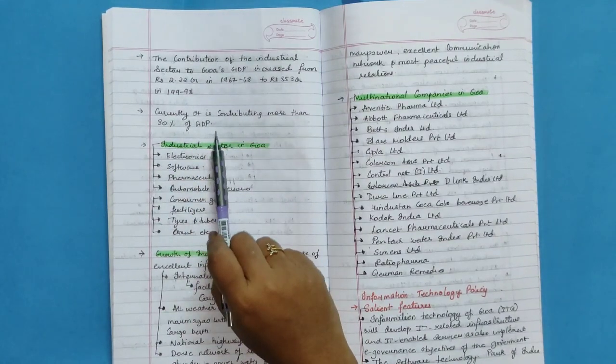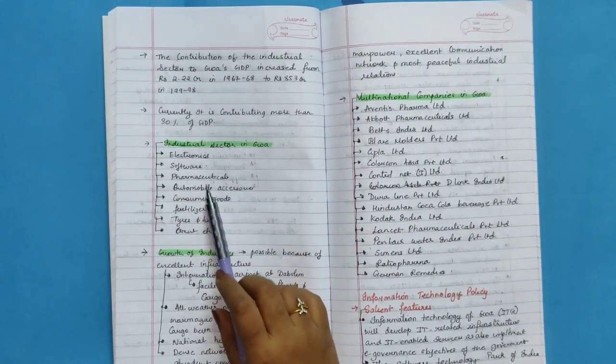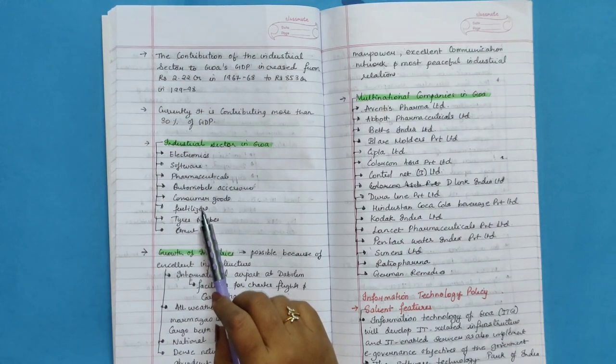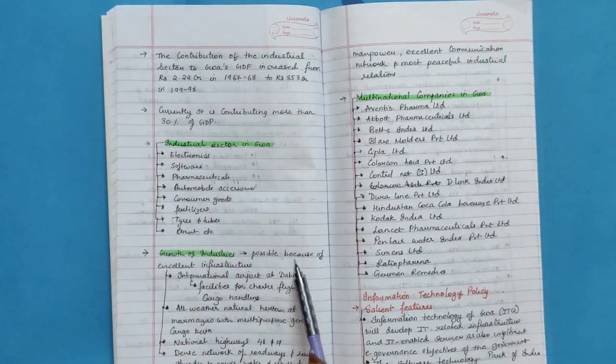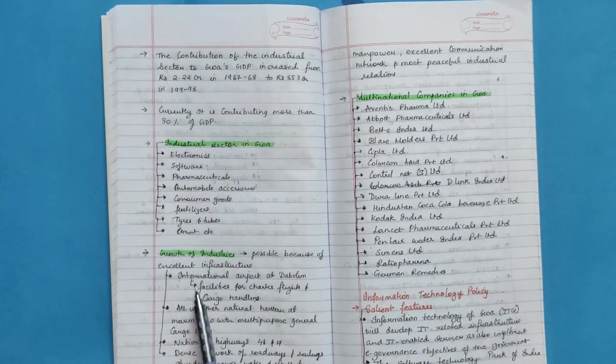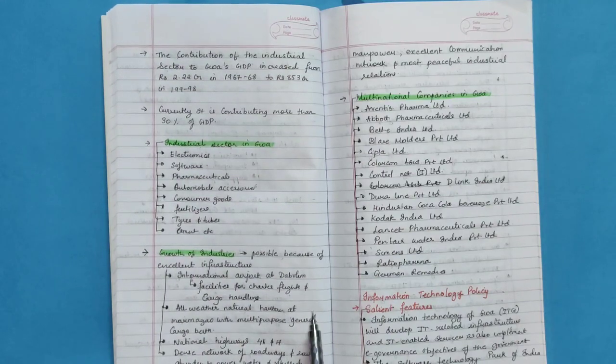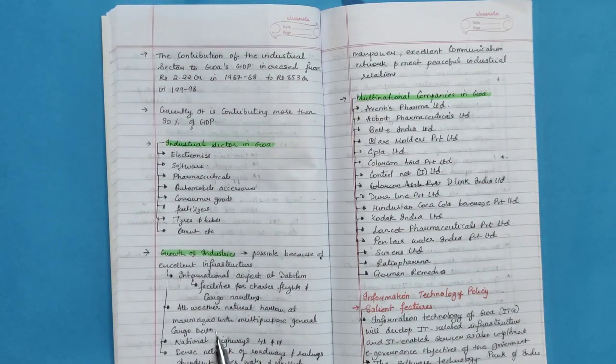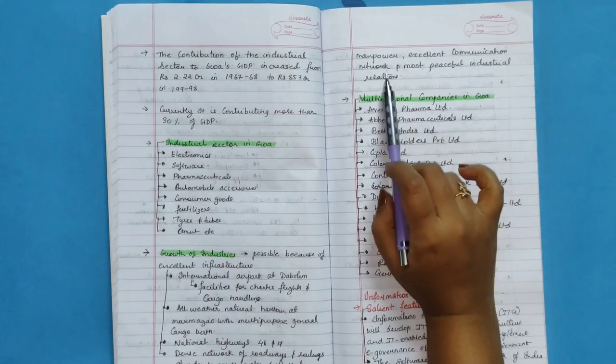Industrial sector in Goa: electronics, software, pharmaceutical, automobile accessories, consumer goods, fertilizers, tires and tubes, cement, etc. Growth of industries is possible because of excellent infrastructure. International Airport at Dabolim. It facilitates for charter flights and cargo handling. All-weather natural harbor at Mormugao with multi-purpose general cargo berth. National highways 4A and 17, dense network of roadways and railways, abundant power, water and skilled manpower, excellent communication network, and most peaceful industrial relations.